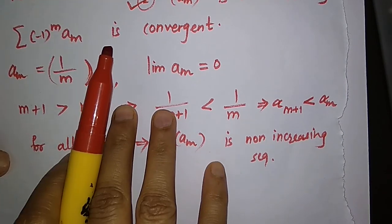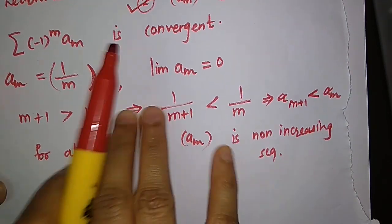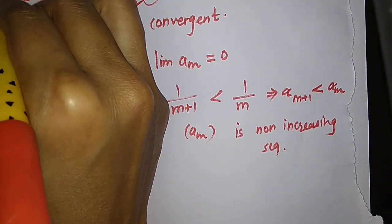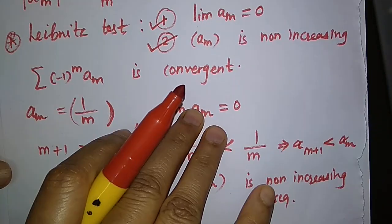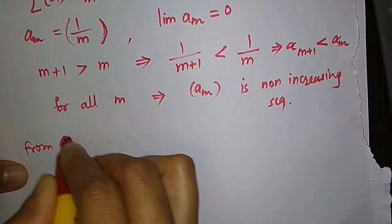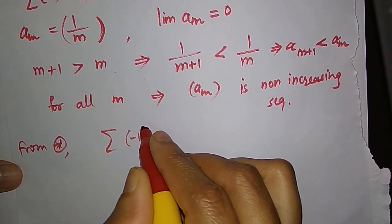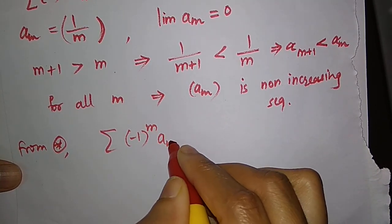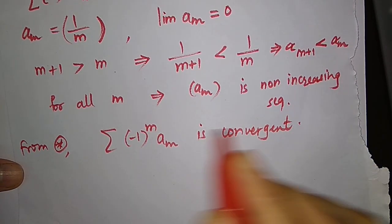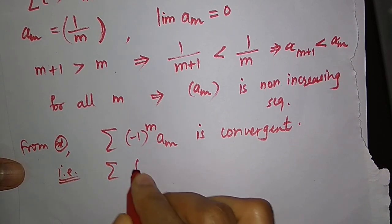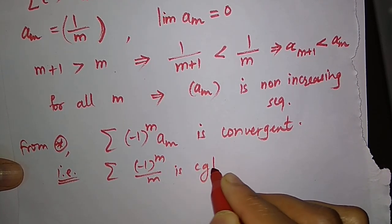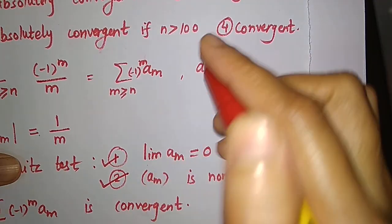The second condition is also satisfied. Hence, from the Leibniz test — let's call it star — we get that the series sum of (-1)^m · a_m is convergent. That is, the given series sum of (-1)^m / m is convergent. So the fourth option is correct.